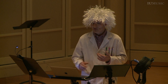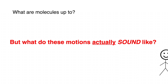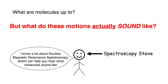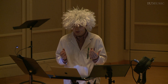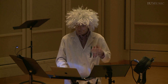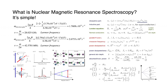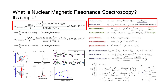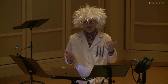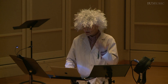And in order to understand what molecules actually sound like, we need help from our friend Spectroscopy Steve. Spectroscopy Steve is great because he knows a lot about nuclear magnetic resonance spectroscopy, which is an analytical technique that chemists use to understand the structures of molecules. But it can also allow us to hear what a molecule sounds like. So what is nuclear magnetic resonance spectroscopy? Well, it's actually pretty simple. So here's some relevant equations. Pay special attention to the top two, because those will be on the quiz following the lecture. So now that we have an idea of the physics and math behind this, let's look at how this works in practice.